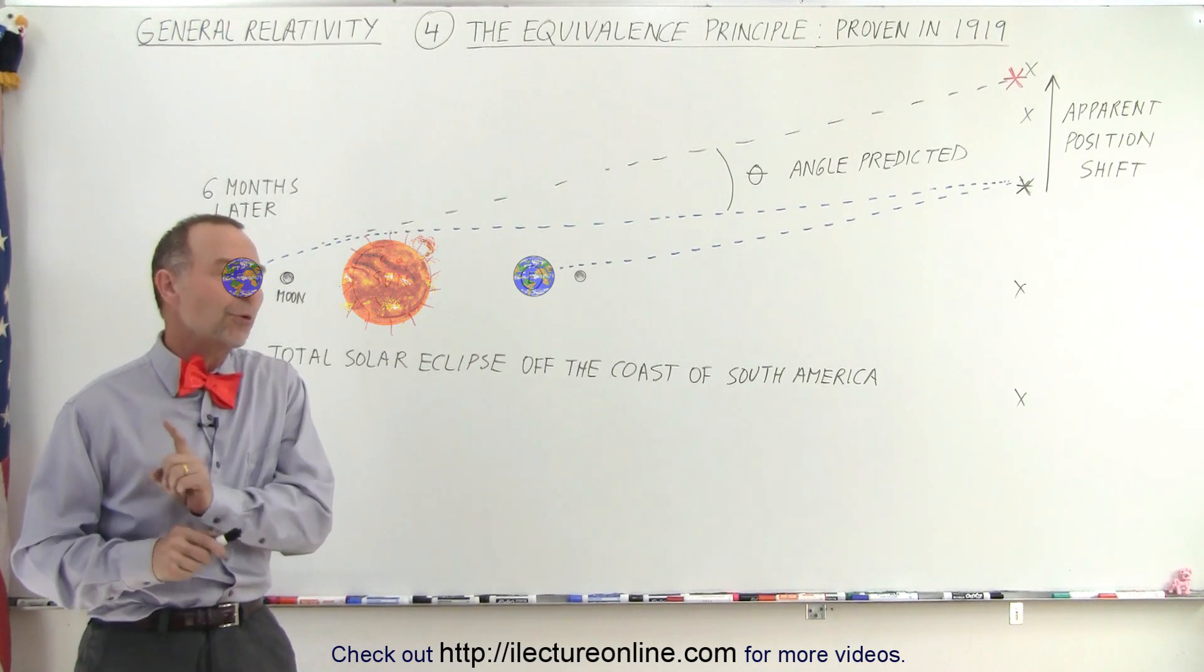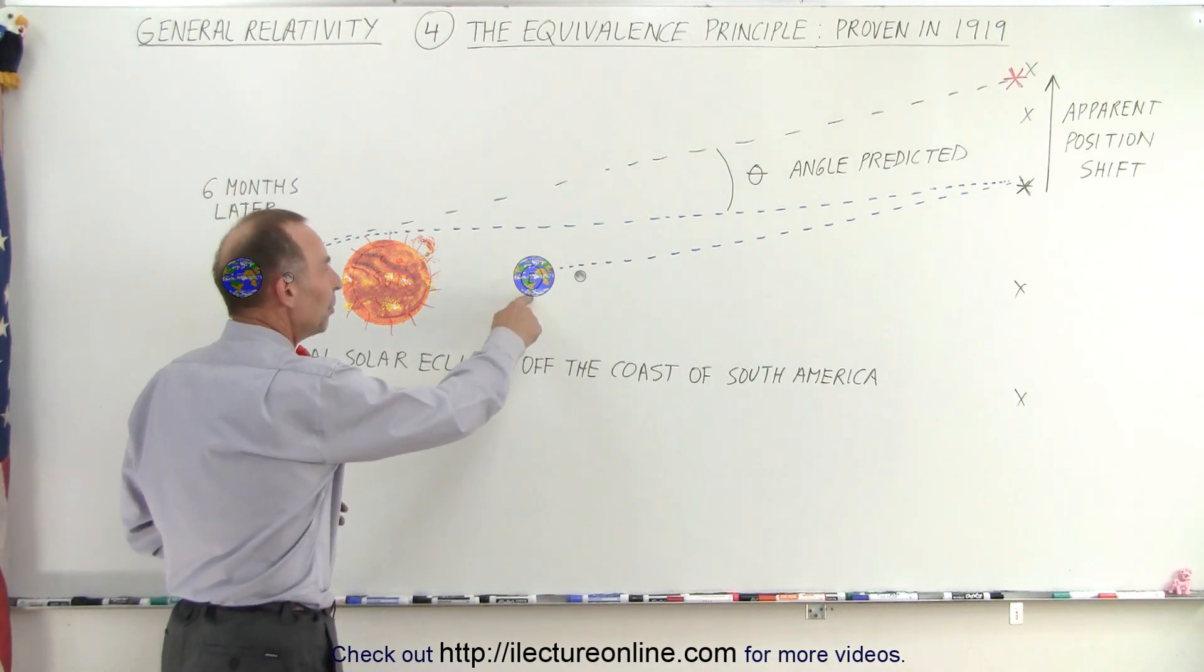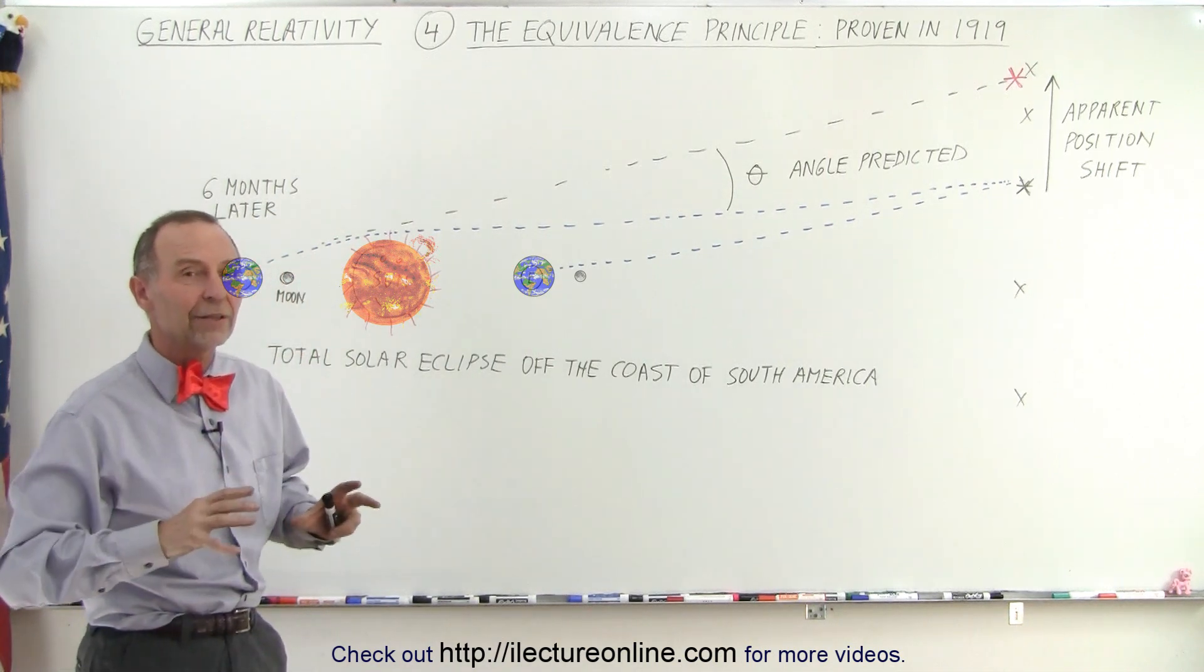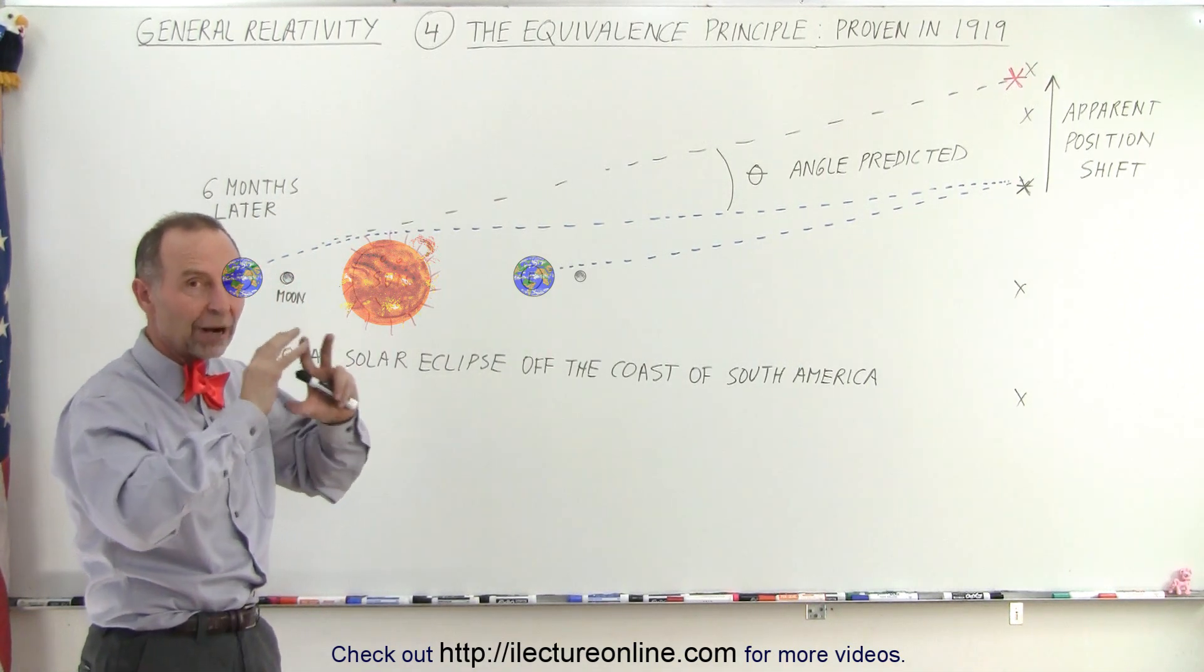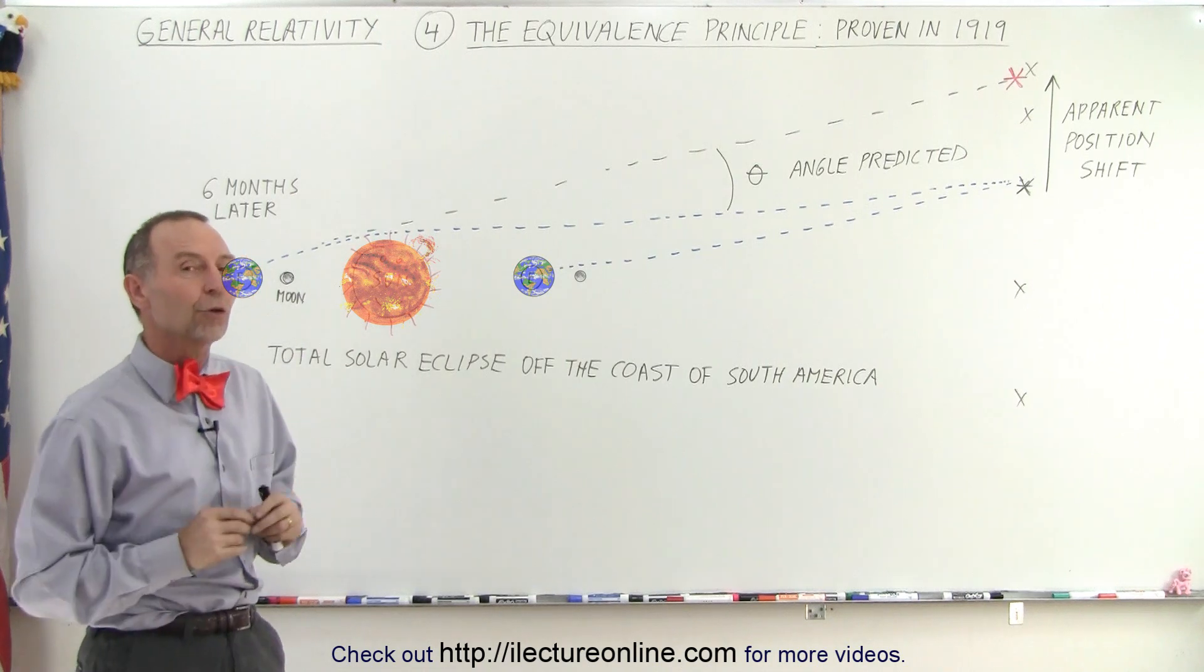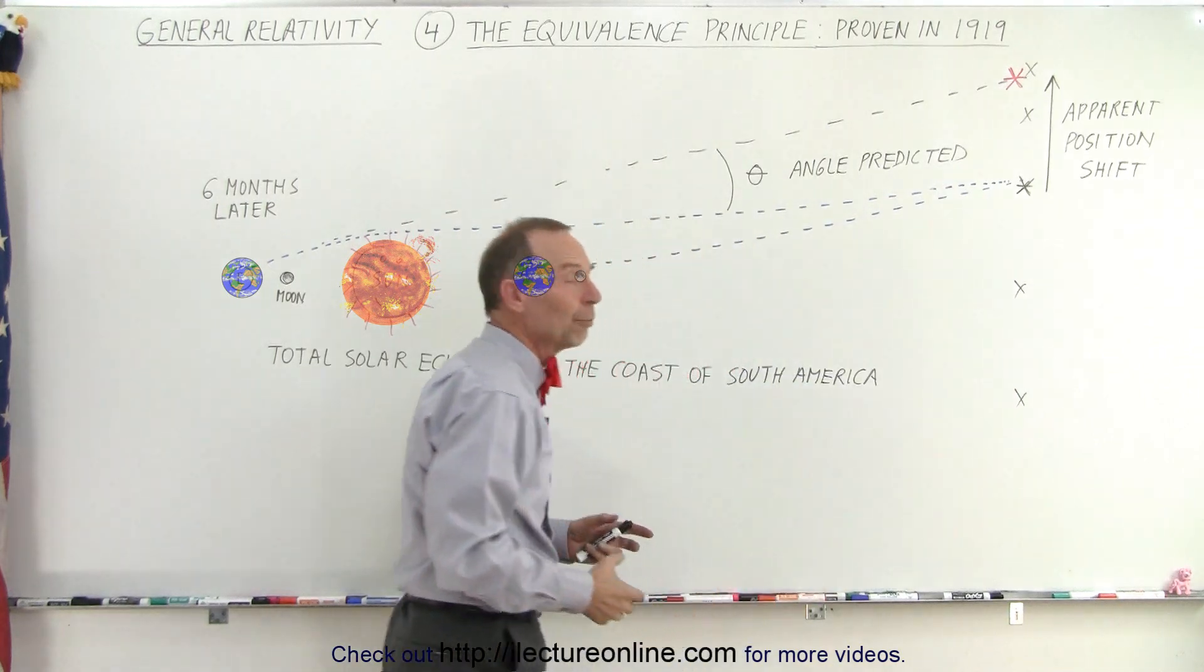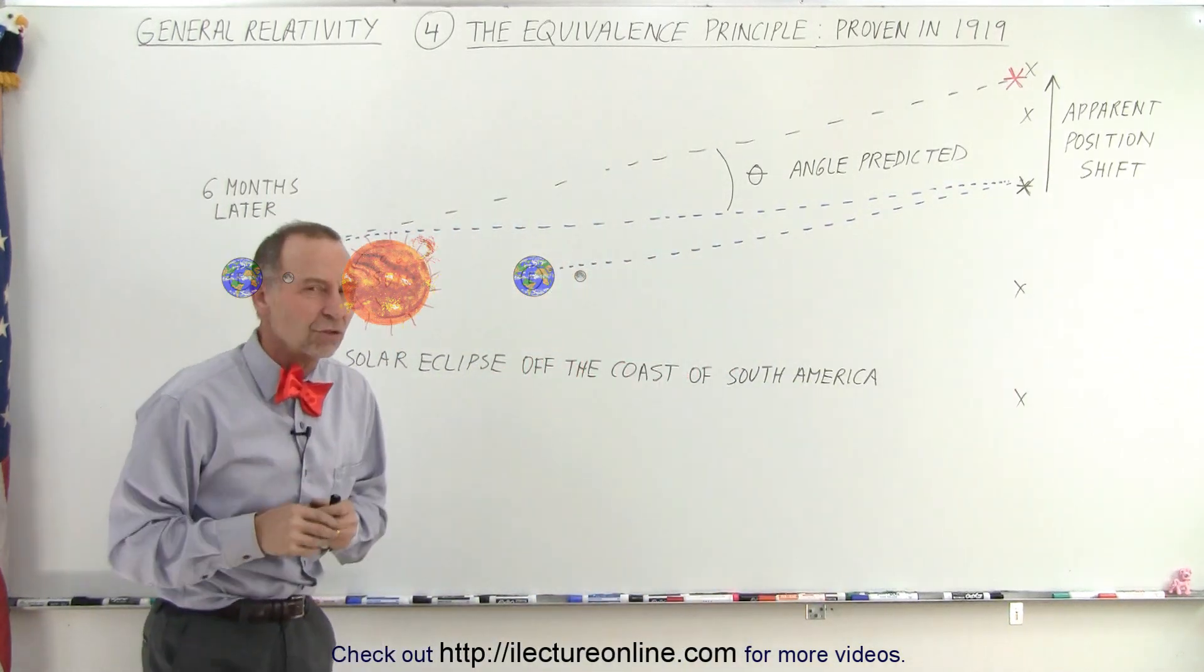But six months before that, when the earth was in this position, he told everybody, take pictures of the sky at night and have the stars, the bright stars in front of you, located on those pictures. So they did, and let's say that the black crosses right here are the representation of the stars they had pictured.